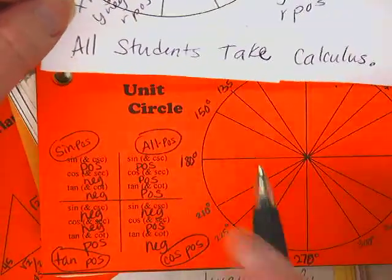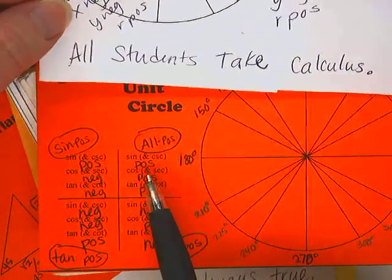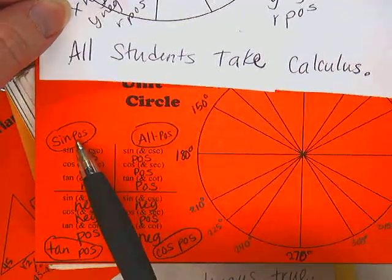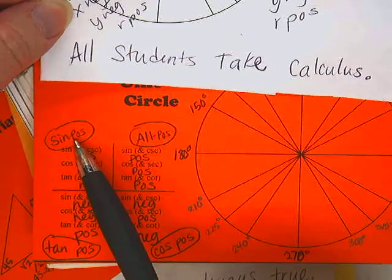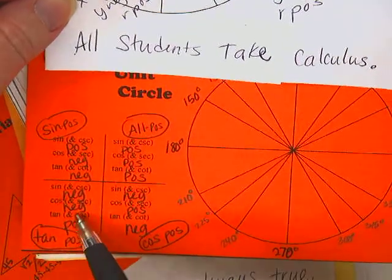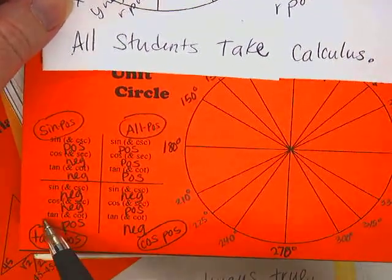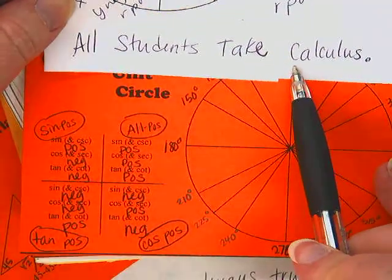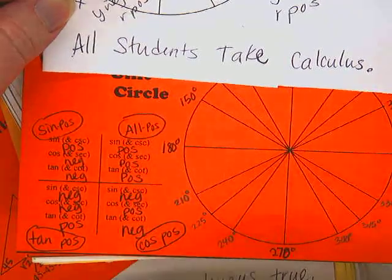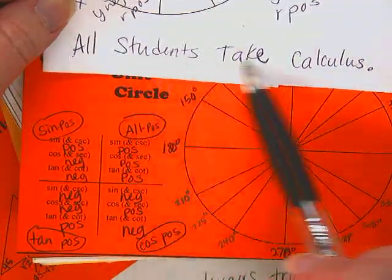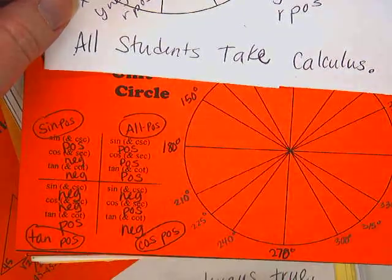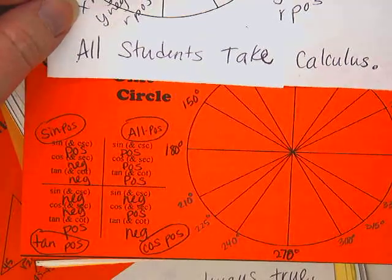Now here's the mnemonic device. All is all. Students—the S in students stands for sine. Sine is the one that's positive. The T in take stands for tangent, because in quadrant three, tangent's the one that is positive. And the C in calculus stands for cosine, because in quadrant four, cosine is the one that is positive. So this is a little subliminal message I'm going to give you every day as we do these.